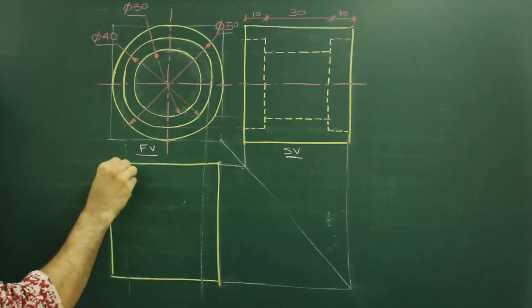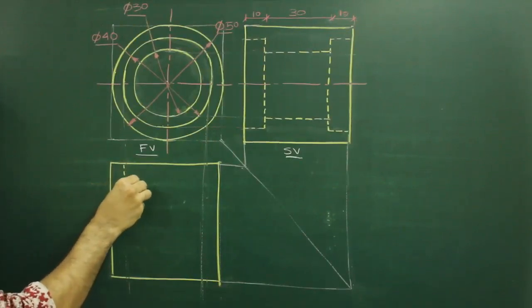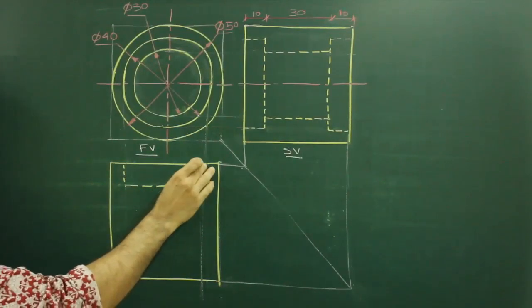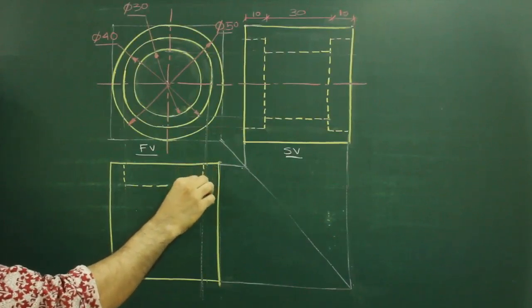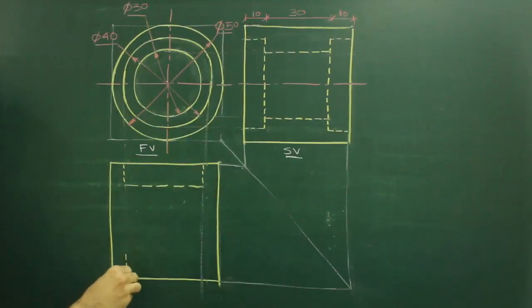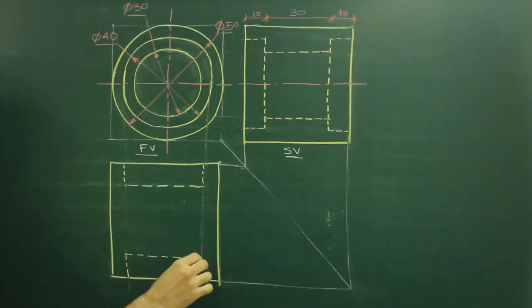And we will go 10 down. Dotted on both the sides. Because it is dotted inside view, so in top view also it will be dotted. We need to remember that circle in one view, other two views will be same.